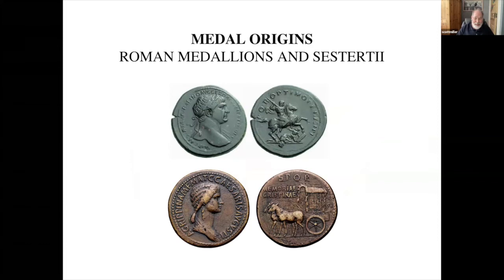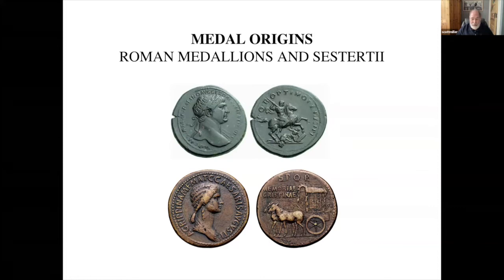Now we go back to the origins of medals. The medal as we know it — the portrait medal — started during the Italian Renaissance. They came about largely because of the renewed interest in ancient Rome and other civilizations. A lot of things were being excavated, and people saw ancient Roman medallions and sculpture. They realized there was a permanence to this, and a way that fame and individuality could last much longer than paper or painting.